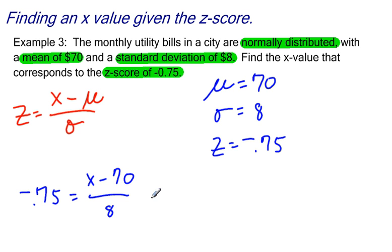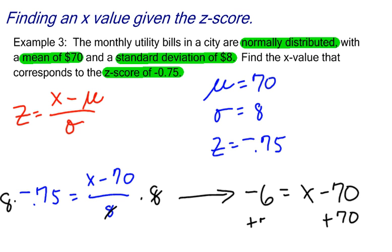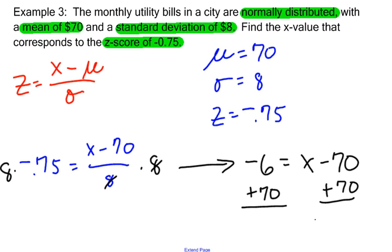I'm going to multiply by 8 on both sides. When I do that, these 8s will reduce out. And I now have 8 times negative 0.75 is equal to negative 6. And that's equal to x minus 70. And now if I add 70 to both sides of my equation, I end up finding that my value of x is equal to negative 6 plus 70, which is 64.